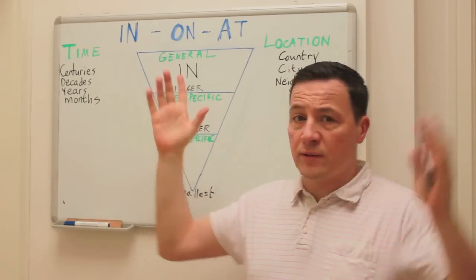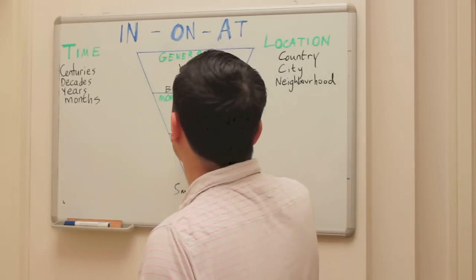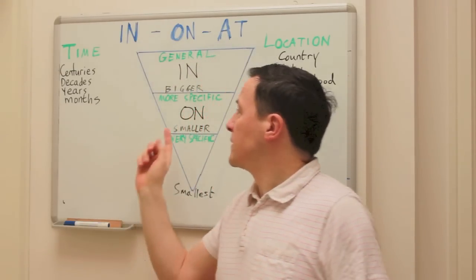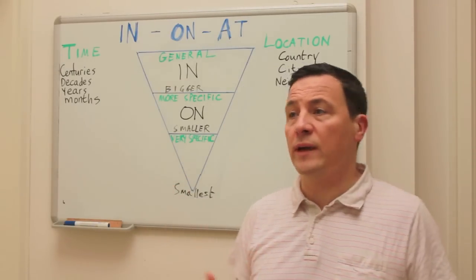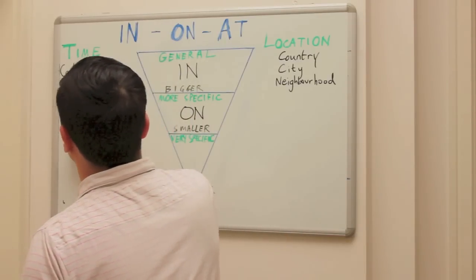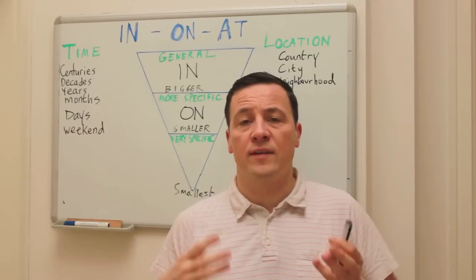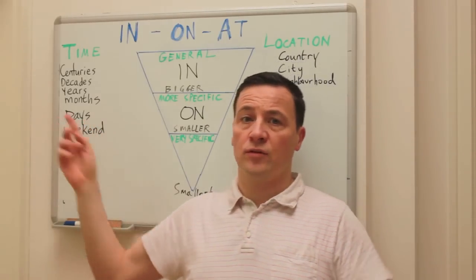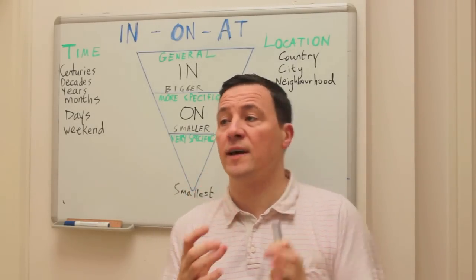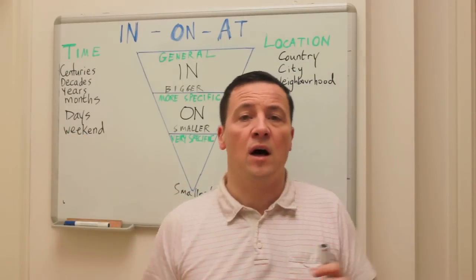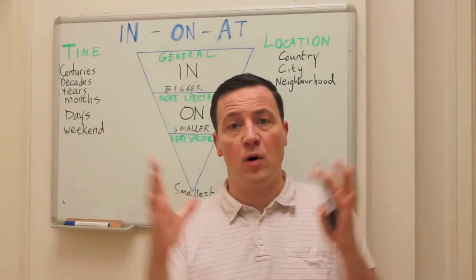Moving on to this one — when it's more specific or when it's smaller, we say 'on'. So for example, with time, we would say on what days or on the weekend. I have English class on Monday, or we always have the sales meeting on Tuesday. So 'on' is for a smaller space of time — on what day. Or you could say on the weekend: I always relax on the weekend, or I don't work on the weekend.